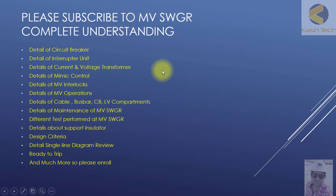After completing this, I will also be launching a detailed MV switchgear course — the complete understanding — which will include a detailed review of all parts such as circuit breaker interrupters, VCB, current and voltage transformers, mimic, MV interlocks, mechanical and electrical interlocks, MV operations, cable and busbar compartments, maintenance, different tests, support insulator design criteria, single line diagram review, ready-to-trip features, and much more. Please take this introductory training and then enroll in the detailed MV switchgear course. Thank you very much.